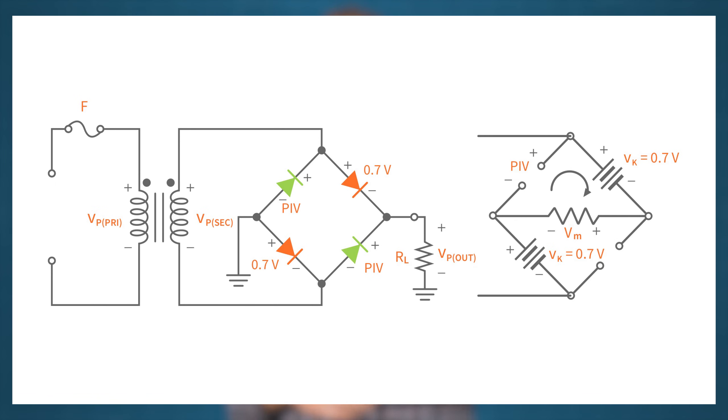Now let's determine the peak inverse voltage, or PIV, that the bridge rectifier diodes must withstand when in a reverse biased condition. Assuming the input is in the positive half-cycle, so D1 and D2 are forward biased while D3 and D4 are reverse biased, you can see in this image that the PIV equals the sum of the peak voltage across the load and the forward voltage of one diode. To be safe, select a diode that has a PIV at least twice that value.